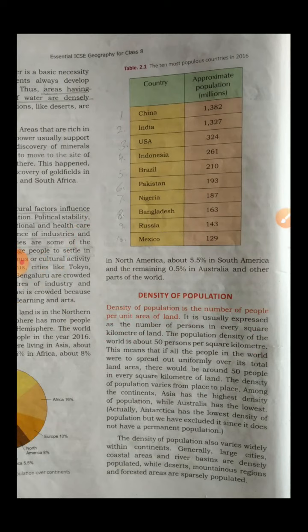Density of population is the number of people per unit area of land. It is usually expressed as number of persons per square kilometer. The population density of the world is about 50 per square kilometer, meaning if all the people were spread uniformly over the total area, there would be around 50 people per square kilometer of land. However, some portions have very high population and some have very less — there is an uneven distribution of population. Among the continents, Asia has the highest density while Australia has the lowest for inhabited continents. Antarctica has the lowest density but is used only for scientific studies, as common people are not supposed to go there.